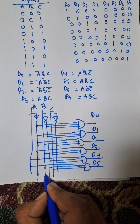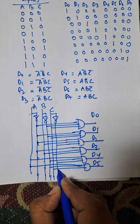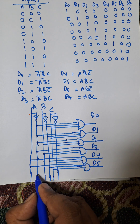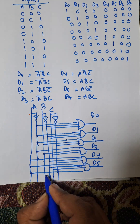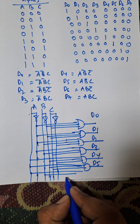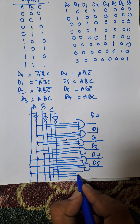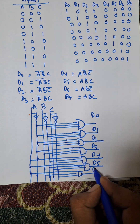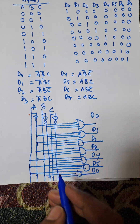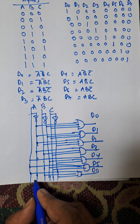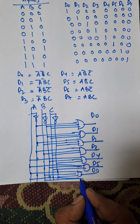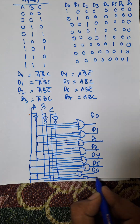For D5, that is A B-bar C. For D6, that is A B C-bar, meaning A B and C-bar. And finally, D7 is A B and C.